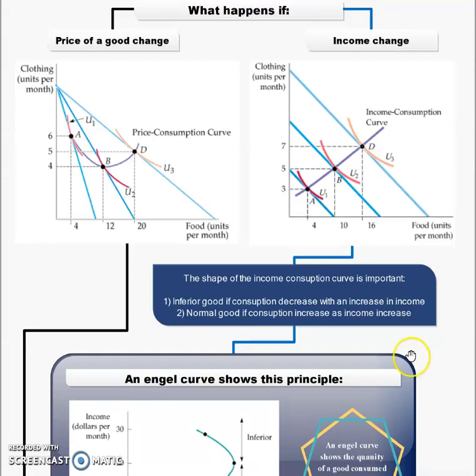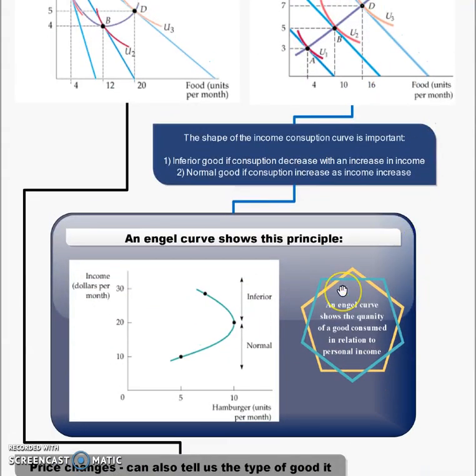We can also show this principle using an Engel curve. An Engel curve shows or illustrates the income versus the quantity of the specific good you are buying. So let's, for example, look at hamburgers. Hamburgers is a normal good as your income increases from 10 to 20. So you use more hamburgers, you buy more hamburgers, you want more hamburgers.